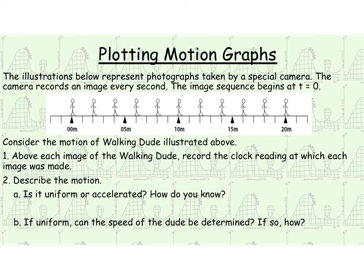You see that we have our little guy here, walking dude, and every time you see his image, that means that a second has went by. It's a special camera. The camera records an image every second, so the initial sequence begins at zero.